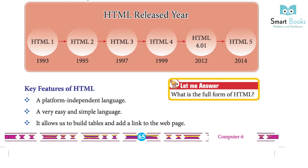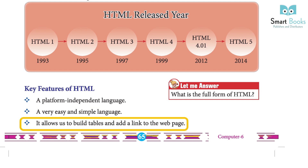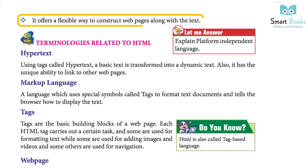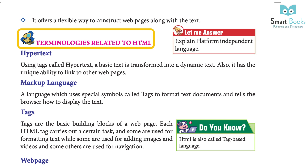What is the full form of HTML? Key features of HTML: It is a platform independent language, a very easy and simple language. It allows us to build tables and add links to a web page. It offers a flexible way to construct web pages along with text.